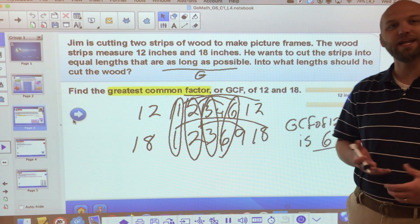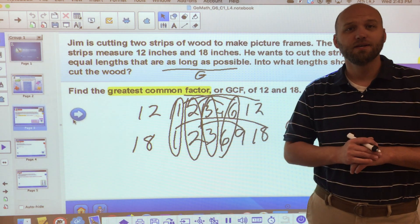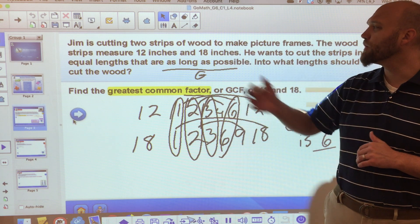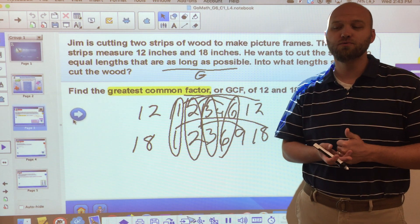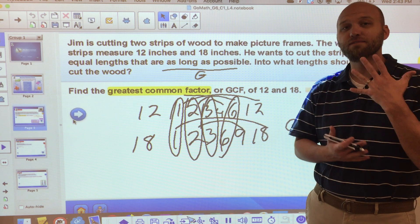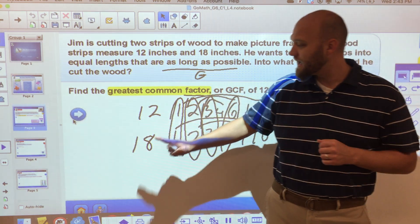The greatest common factor of 12 and 18 is 6. So if I took both of those strips of wood and I cut them up into 6 inch pieces, I would have 5 strips of wood because I would have 2 here and 3 out of here.